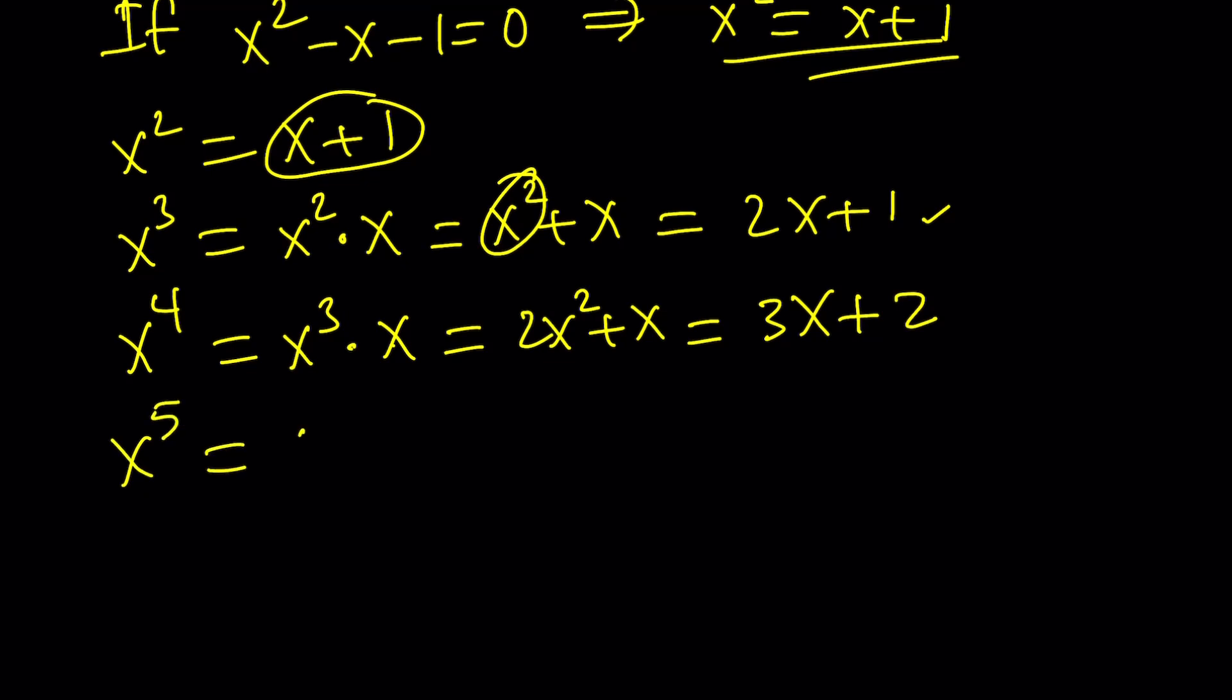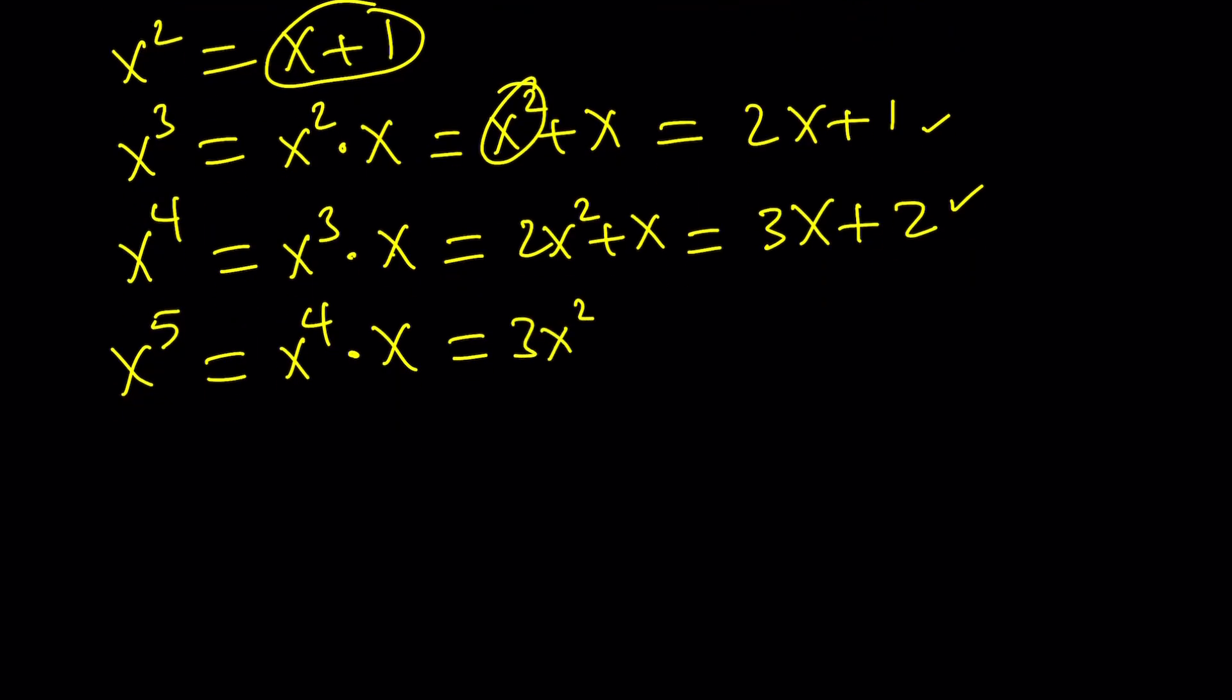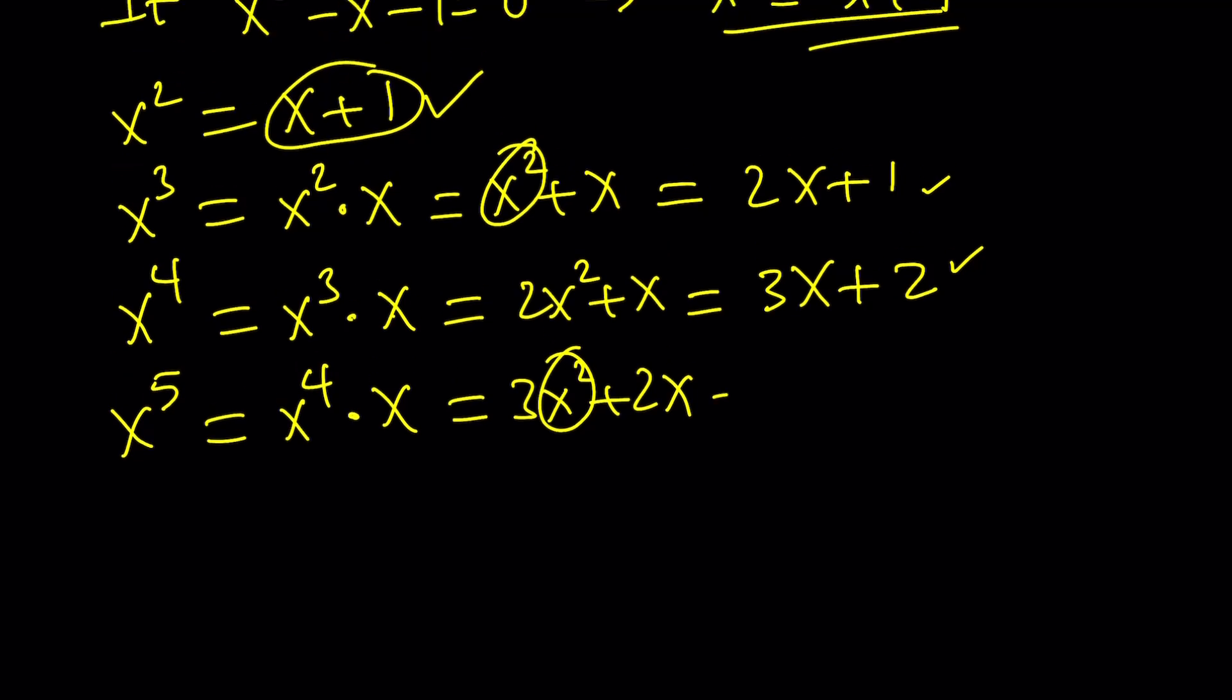x to the 5th is x to the 4th times x. And as you know, this is x to the 4th. Multiply by x. Replace x squared with x plus 1. 3x plus 3. 5x plus 3. Great.